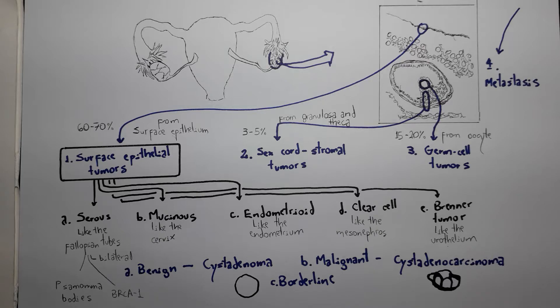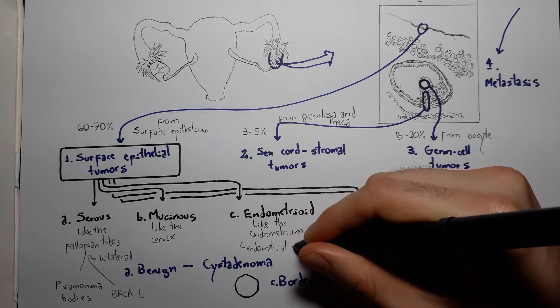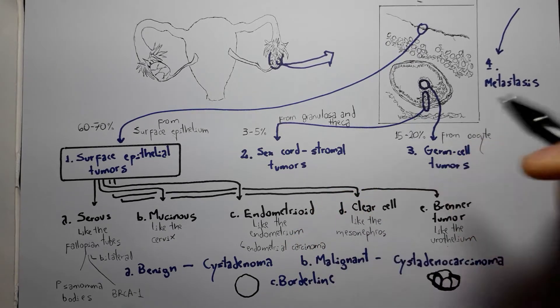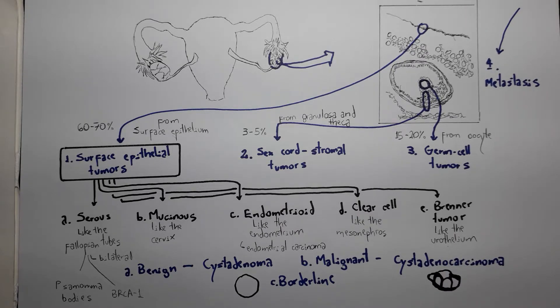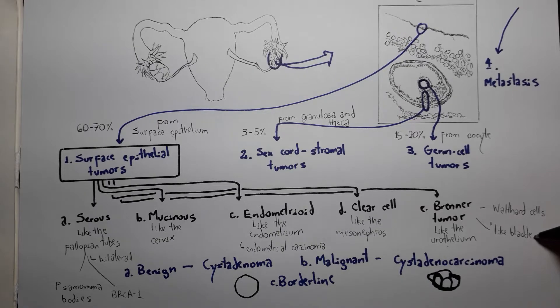Mucinous cysts are filled with mucus material. Endometrioid tumors are associated with endometrial cancer in up to 15-30% of cases. The clear cell tumor is rarely mentioned. The Brenner tumor is famous for the Walthard cells, which are similar to urothelial cells. We could remember that Brenner is like the bladder, since this tumor's claim to fame is precisely that it resembles transitional epithelium.